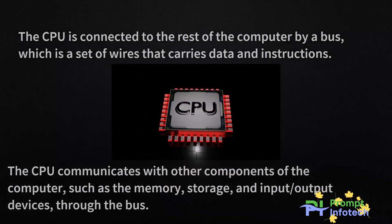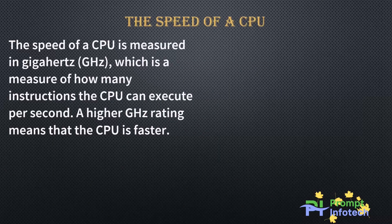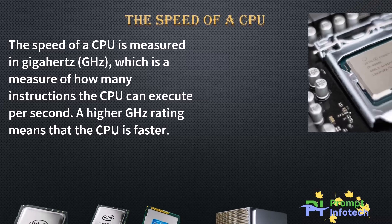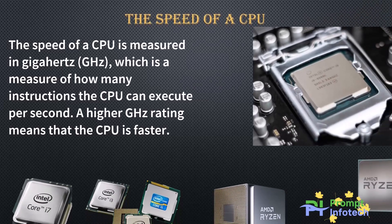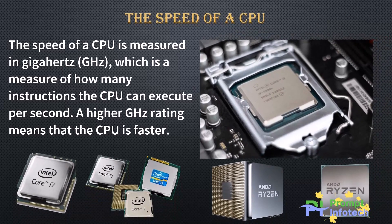The speed of a CPU is measured in GHz, which is a measure of how many instructions the CPU can execute per second. A higher GHz rating means that the CPU is faster.